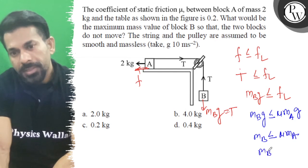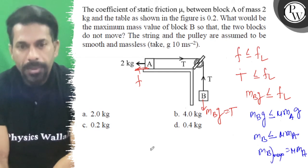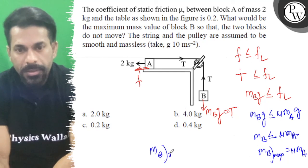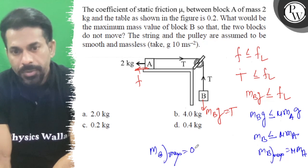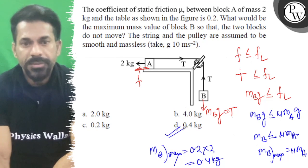So MB maximum equals μ*MA. That is 0.4 kg. So the right answer is D.